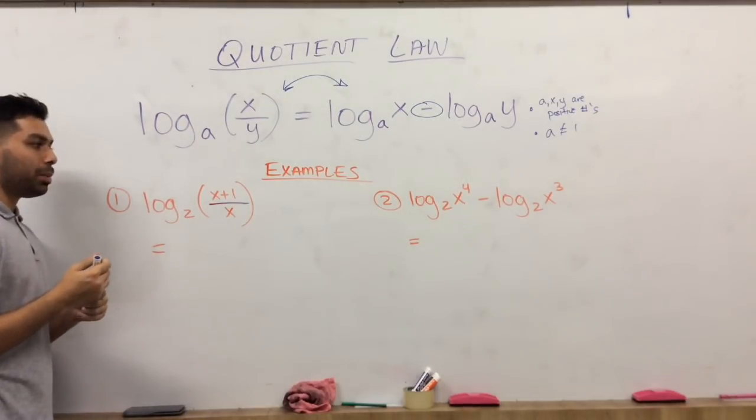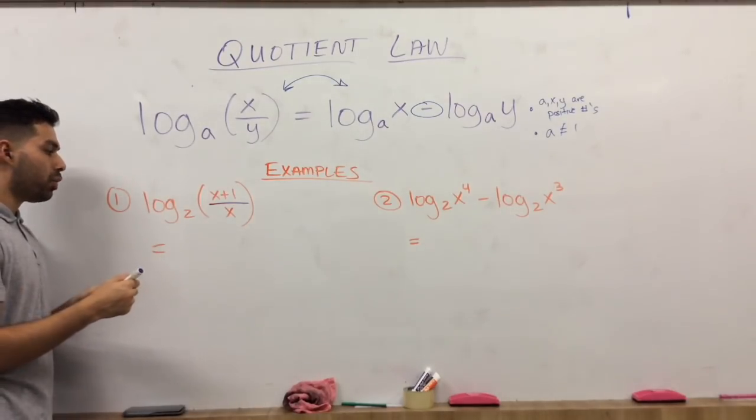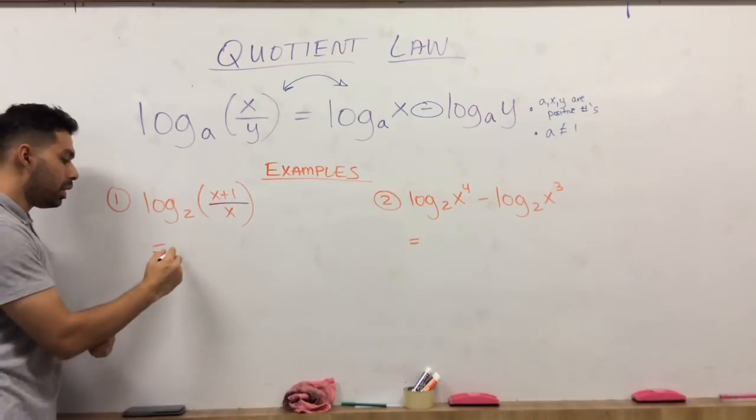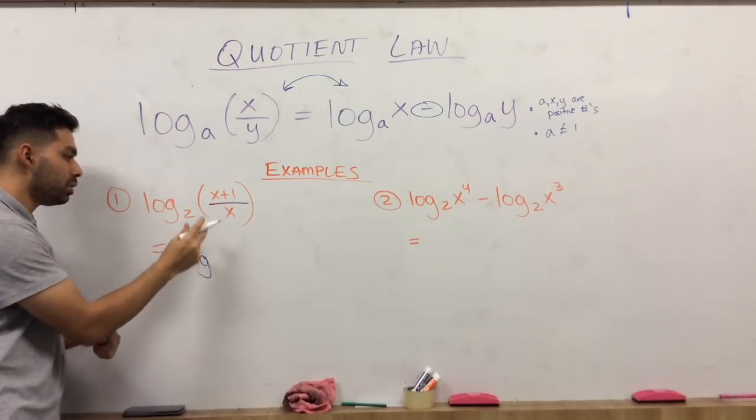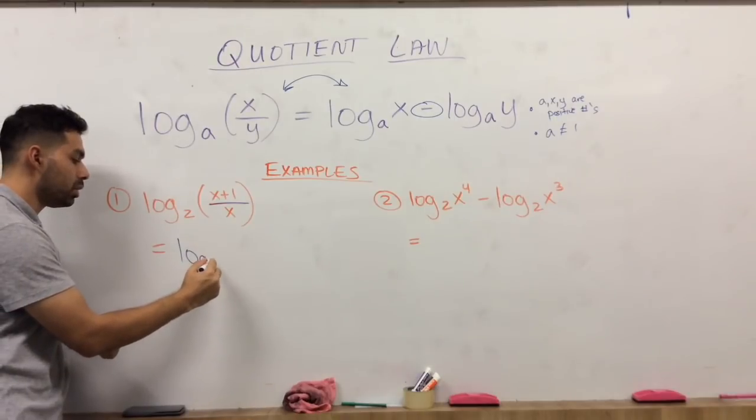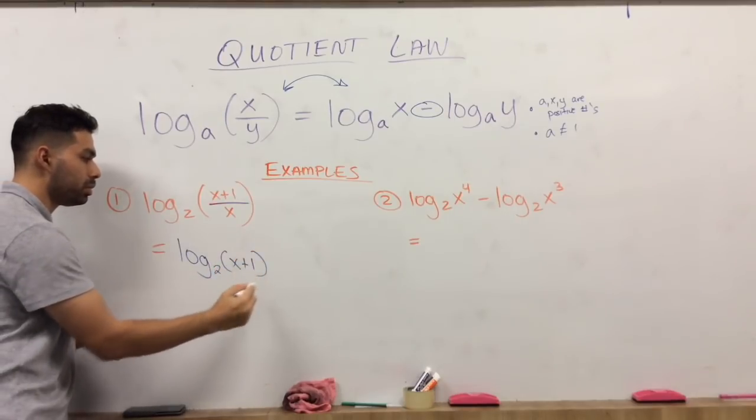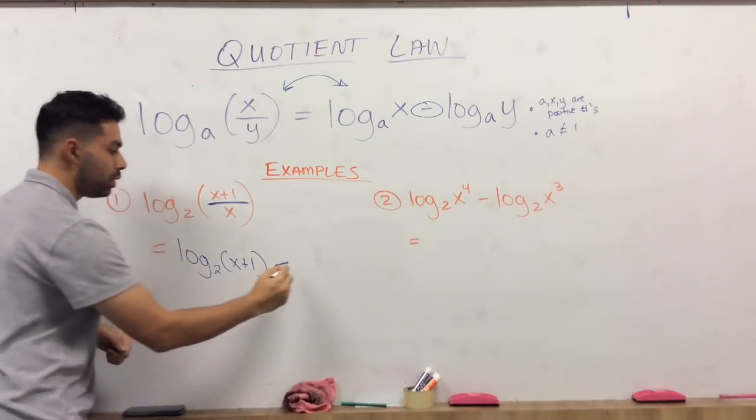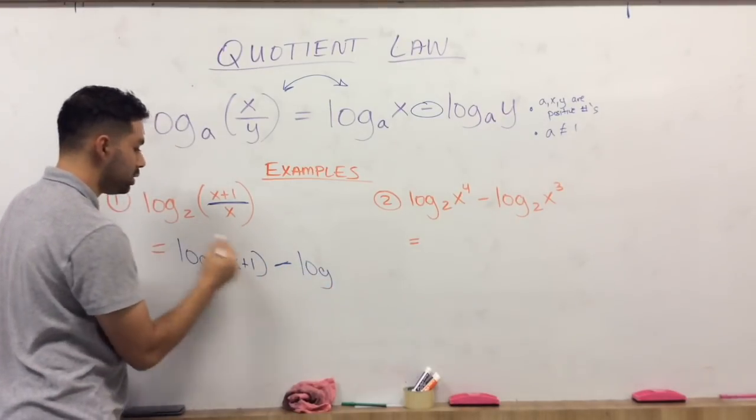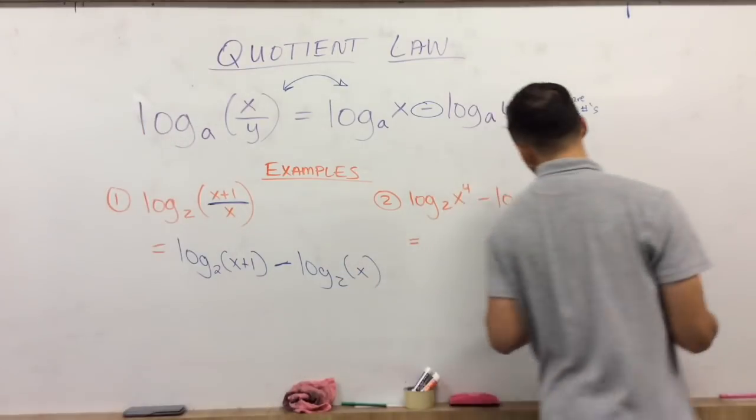Now, let's go ahead and do two examples. This is in condensed form. We're going to make it into expanded form. Now, since both of these have the base of 2, these factors have the base of 2. This should be log of base 2, and then X plus 1. It is division, so you are going to subtract. You are going to say log of base 2 times X.